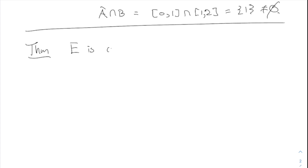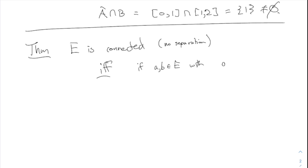The theorem says: E is connected (meaning no separation) if and only if, whenever a and b are in E with a < c < b, then c is in E. The right-hand side says if you ever have two points in your set, then any point in between is also in the set. That is equivalent to saying there's no separation with those closure conditions.